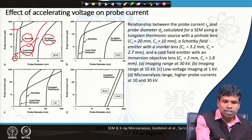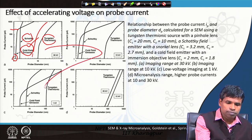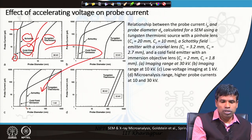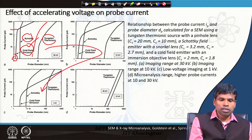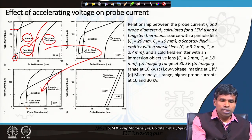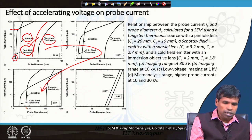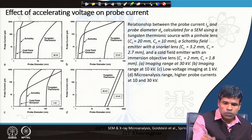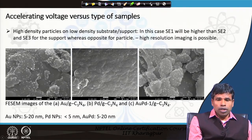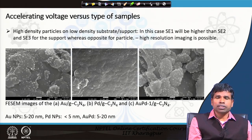As we decrease the acceleration voltage, probe current decreases and additionally we need a larger probe diameter to get enough signal. The effect of acceleration voltage on probe current is shown in these plots. We will discuss more about what happens with different types of acceleration voltages for different kinds of samples in our next lecture.